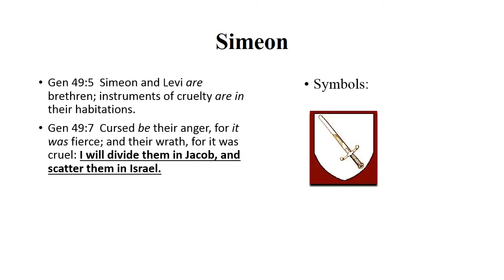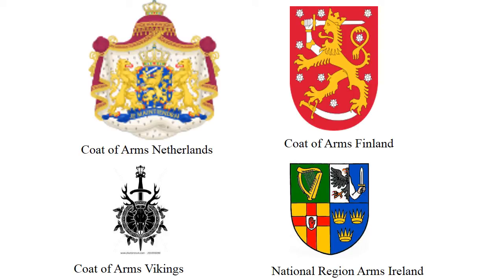The tribe of Simeon never received a land inheritance. Genesis 49:5 says 'Simeon and Levi are brethren; instruments of cruelty are in their habitations.' They were a cruel people. It says 'Cursed be their anger, for it was fierce, and their wrath, for it was cruel. I will divide them in Jacob and scatter them in Israel.' So they never received a land inheritance, but you would see their symbol — the sword — all through the other Israelite countries: in the Netherlands, in Finland, in the Viking area, and also in Ireland.